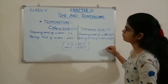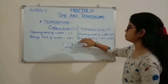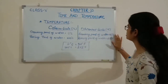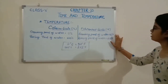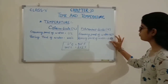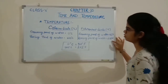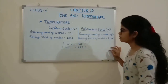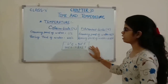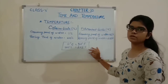The freezing point of water in the Celsius scale is 0 degrees Celsius and the boiling point is 100 degrees Celsius. In the Fahrenheit scale, the freezing point of water is 32 degrees Fahrenheit and the boiling point is 212 degrees Fahrenheit. So we can say 0°C equals 32°F and 100°C equals 212°F.